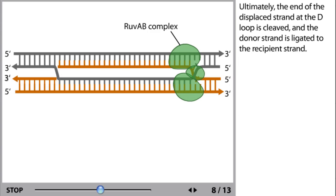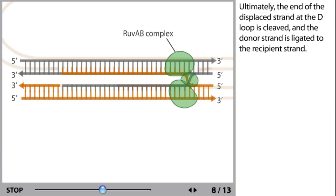Ultimately, the end of the displaced strand at the D-loop is cleaved and the donor strand is ligated to the recipient strand.